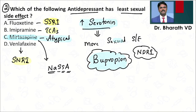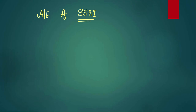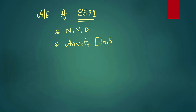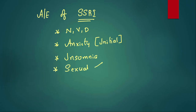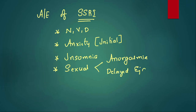More serotonin means more sexual side effects. The adverse effects of SSRIs include: nausea, vomiting, and diarrhea; anxiety in the initial days of starting the drug; insomnia — that is why SSRIs should not be given at night; and sexual side effects such as anorgasmia and delayed ejaculation.